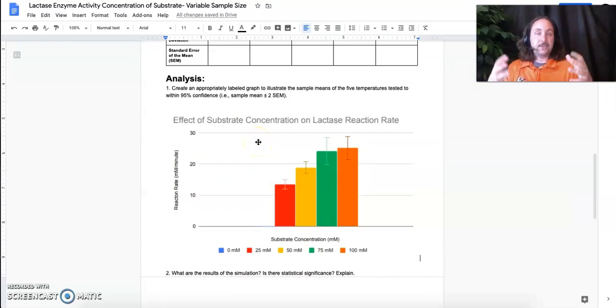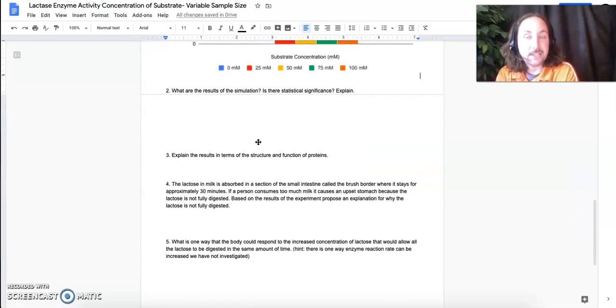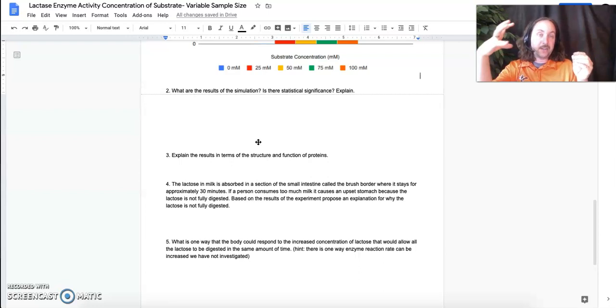Explaining the results in terms of the structure and function of proteins. In the case of substrate concentration, we have the enzymes, we have the substrate, they're kind of running into each other. If you have more of the substrate, there's more opportunities for them to run into the enzyme. That's it. That's why it happens. So this relies on collision theory. So when you're asked to explain the results, you need to come up with some biological principle that explains why the observed behavior occurred. In this case, it's because collision theory tells us that if you have a greater number of substrate, that there's a greater chance they're going to run into an enzyme.